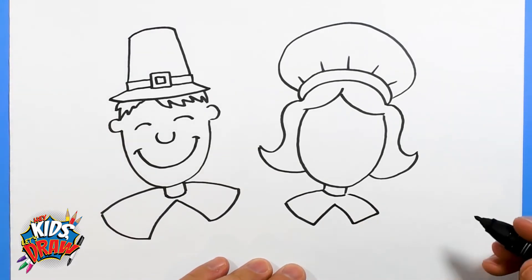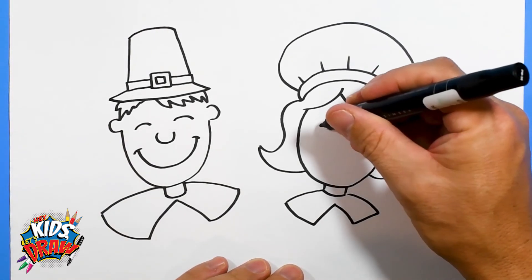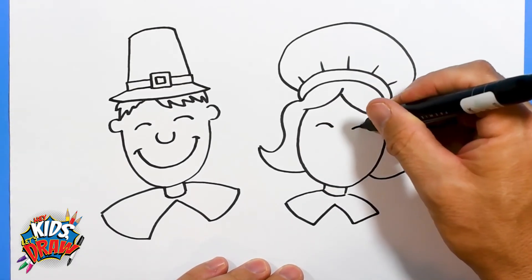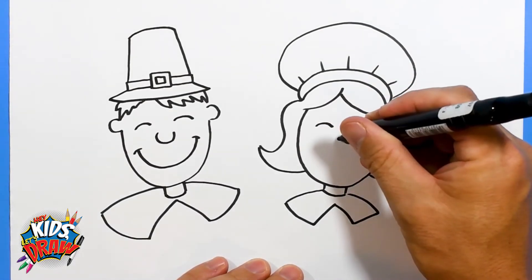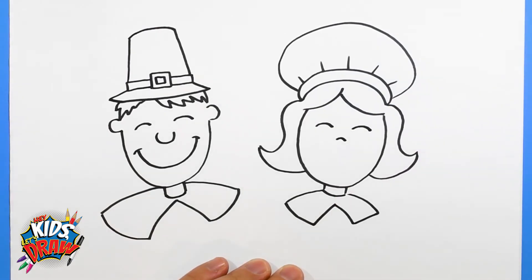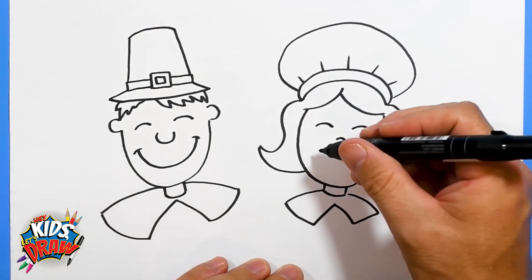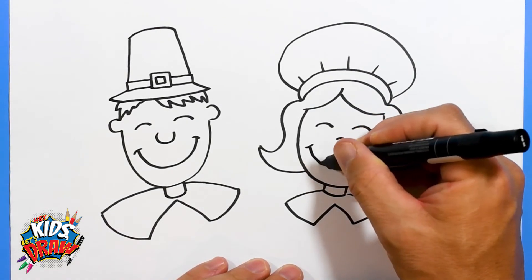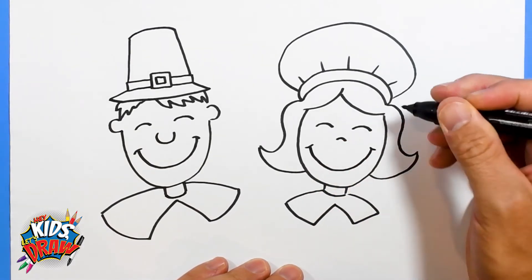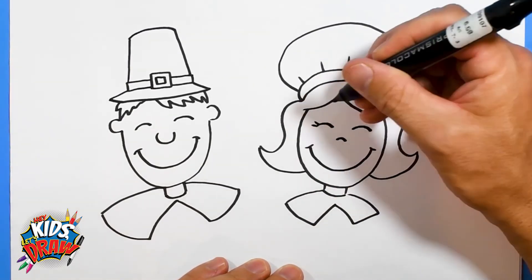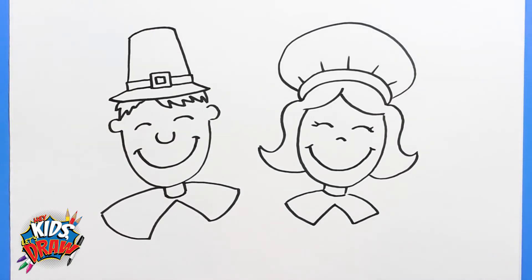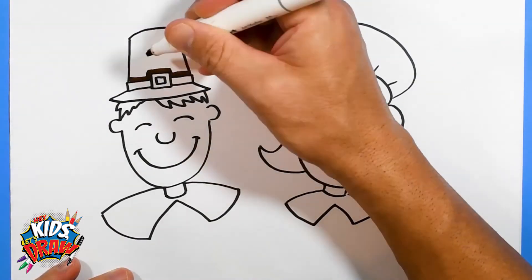We'll do a smiley face for this girl, real easy. Girls typically have a little smaller nose than a boy, big smile, maybe a couple of eyelashes for that girl. Okay, we have our pilgrims. Let's color those really fast. We're going to hit fast forward. Thanks for joining us on Hey Kids Let's Draw.